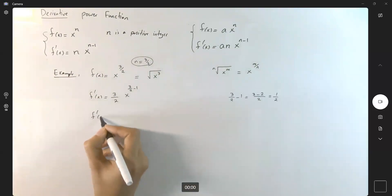So f'(x) becomes 3/2 x to power a half. But x to power a half is just radical x, so f'(x) becomes 3/2 square root of x.